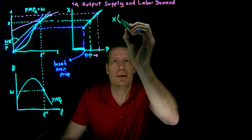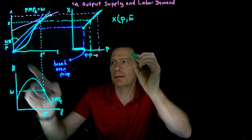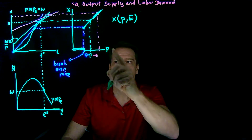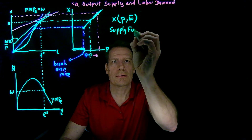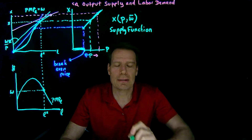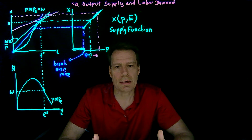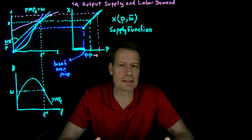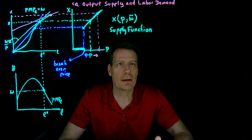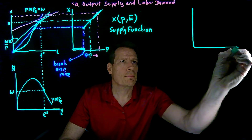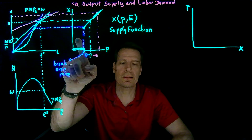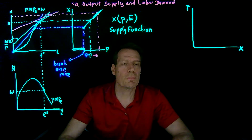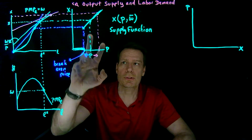This is a function. It's a function that tells us for different prices, holding wages fixed at whatever the current wage level is, how much output we're going to produce. So this is a supply function, which is not exactly the same thing as a supply curve, just like a demand curve wasn't exactly the same thing as a demand function. But the relationship between a supply function and a supply curve is exactly the same as the relationship between a demand function and a demand curve. For a supply curve, we want to put price on the vertical axis and output on the horizontal axis. That's exactly the inverse of what we have here. All the information we need for the supply curve is already contained in this picture — we just have to flip the axes.